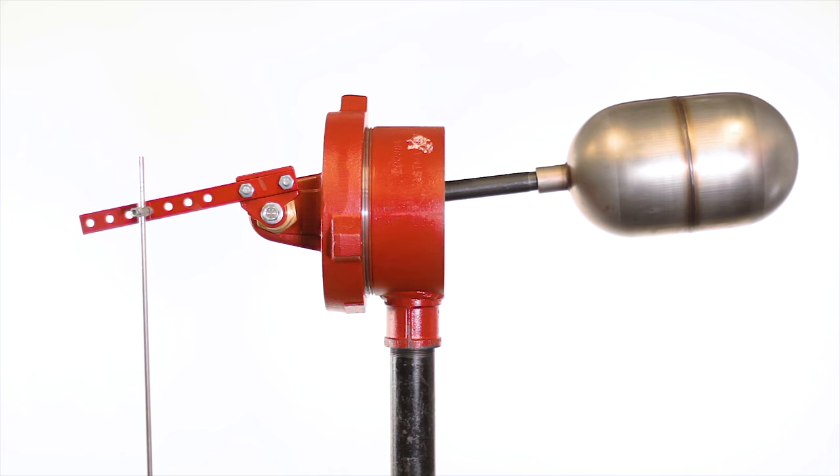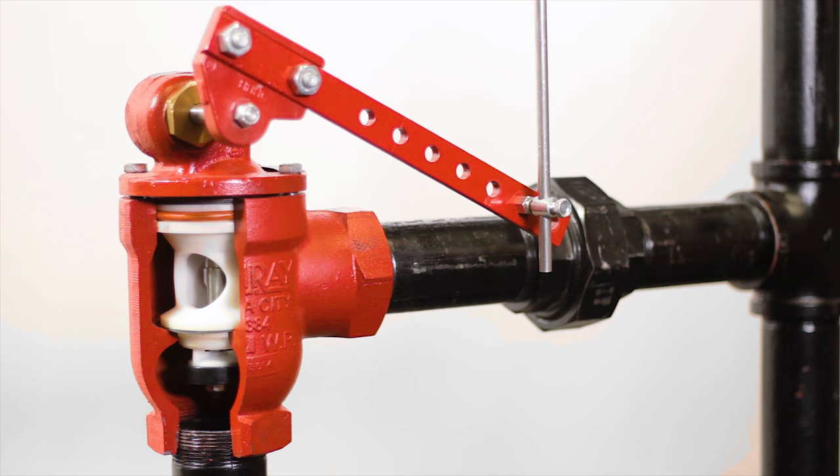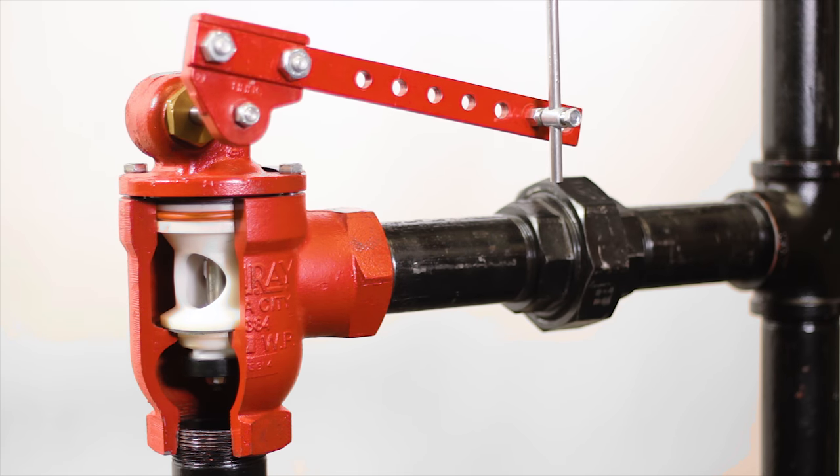As the liquid level in the vessel begins to fall, the float moves downward, forcing the trunnion lever upward. This pulls the valve lever up and closes the valve.